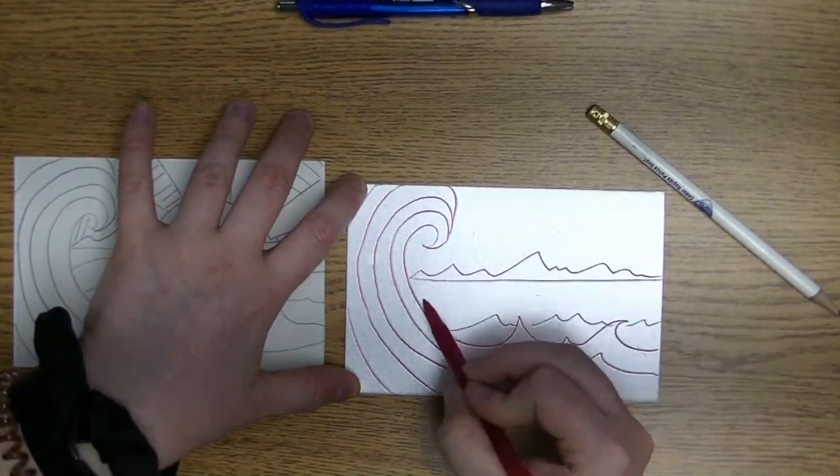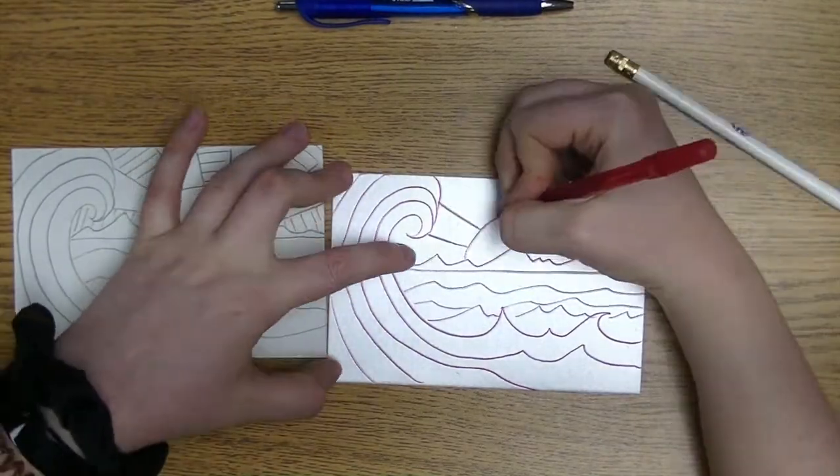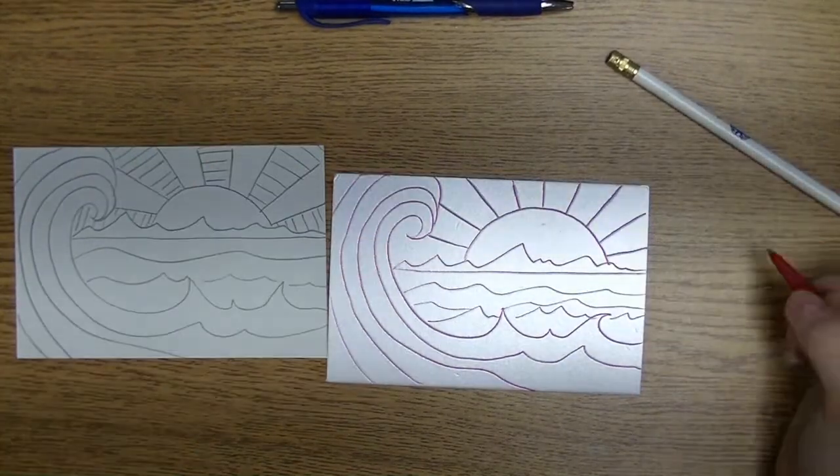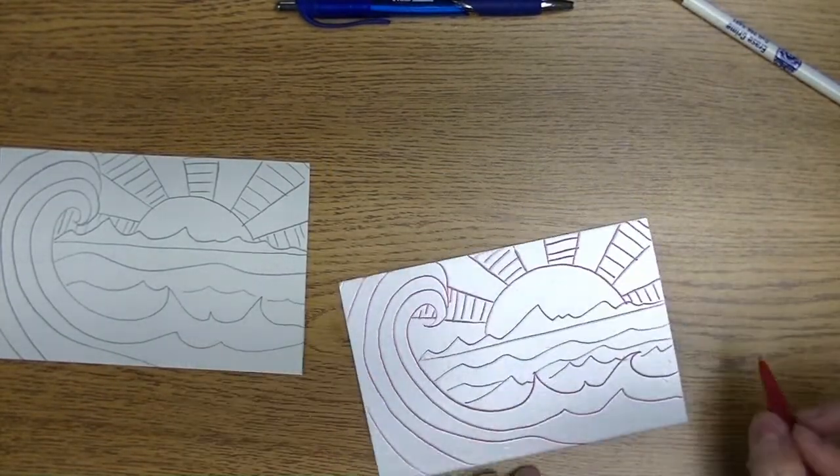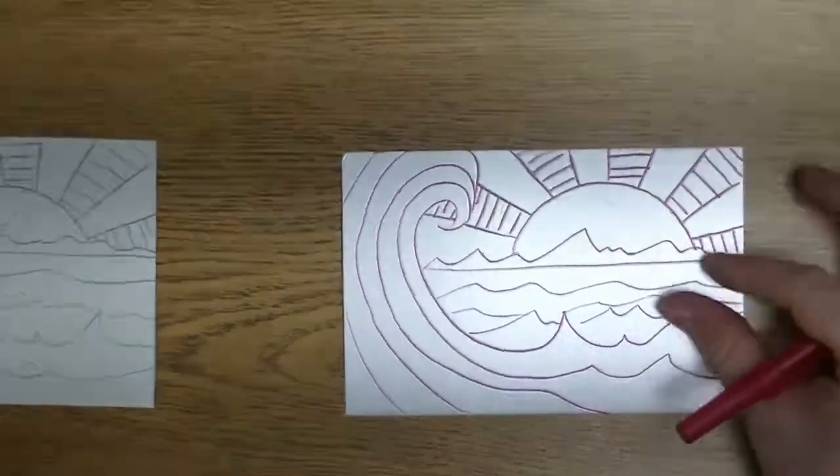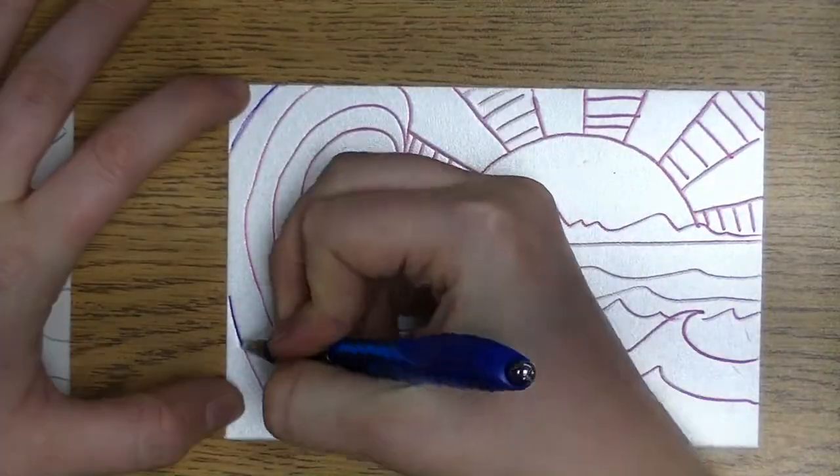You want to press pretty firmly when you're drawing your design in, because wherever you make an impression into that styrofoam, that is what's going to print later and it will show up as white on your print.